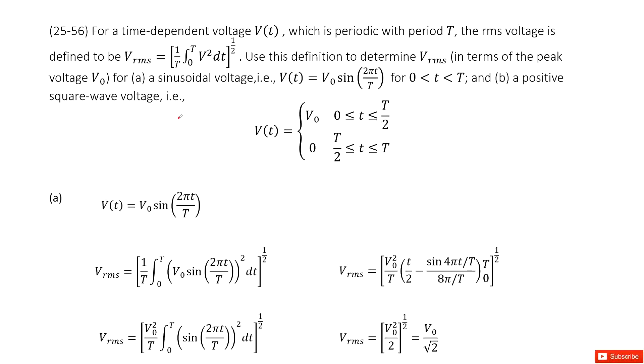Chapter 25 is about electrical currents and resistance. There we look at the time-dependent voltages and determine its RMS voltages. And then you can see two equations given.